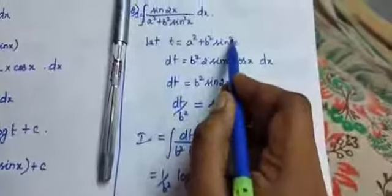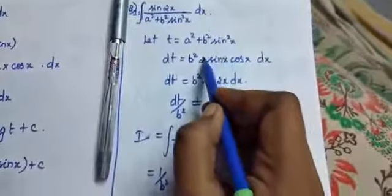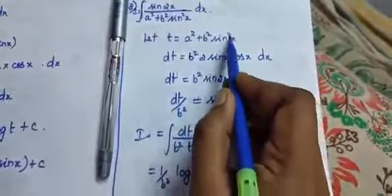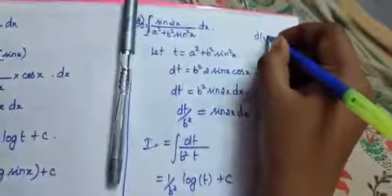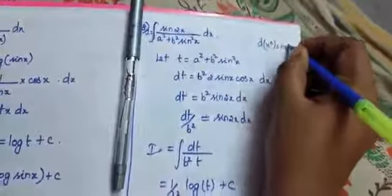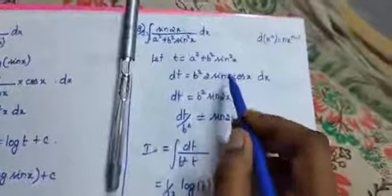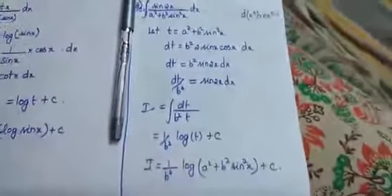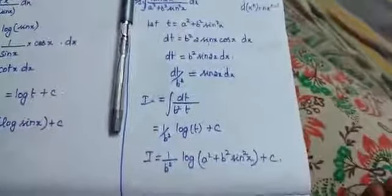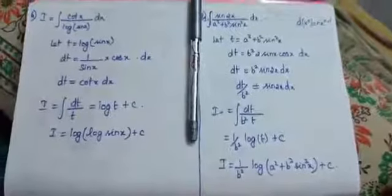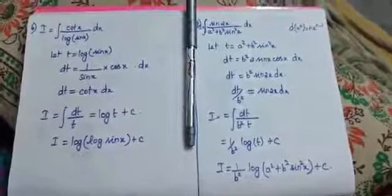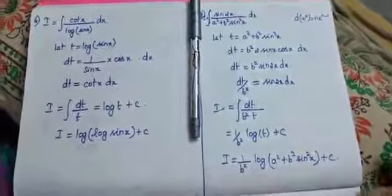Here, b squared into t: if we differentiate, it brings 2 sin x, because the differentiation of x power n is equal to n times x power n minus 1, giving 2 sin x. And sin x differentiation is cos x. So the answer is 1 by b squared into log of a squared plus b squared sin squared x, plus c.